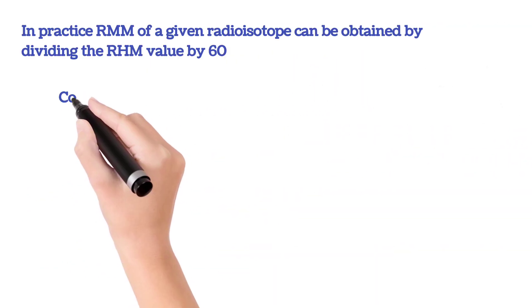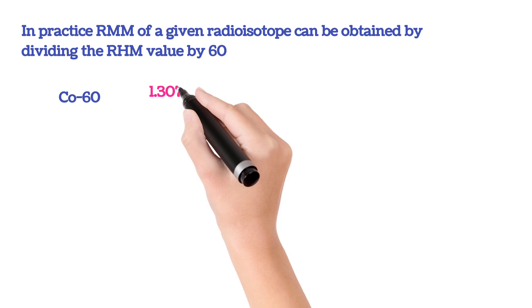In practice, RMM of a given radioisotope can be obtained by dividing the RHM value by 60.